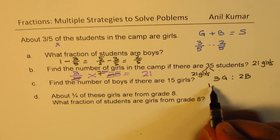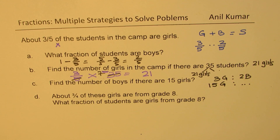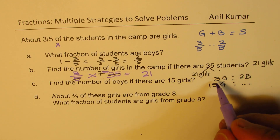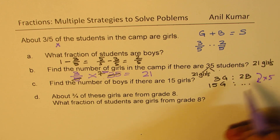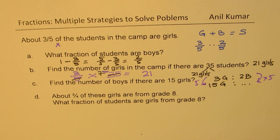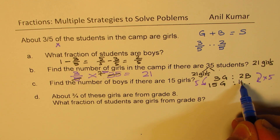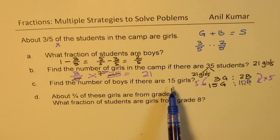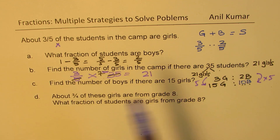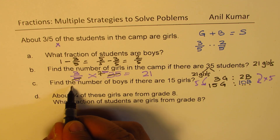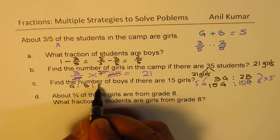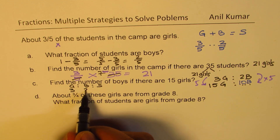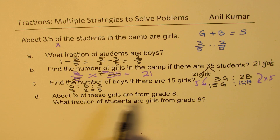We have 15 girls and need to figure out how many boys. Looking at the ratio, it is times five — five times three is 15, and therefore two times five gives ten boys. The ratio of girls to boys is three to two, since three-fifths are girls and two-fifths are boys. So we use that ratio to find the number of boys when we know how many girls there are.